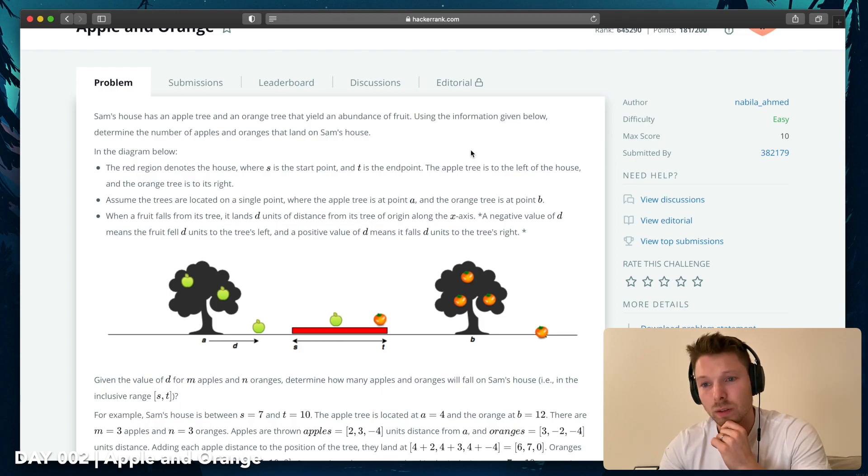Assume the trees are located on a single point, where the apple tree is at point A and the orange tree is at point B. When a fruit falls from its tree, it lands D units of distance from its tree of origin along the X axis. A negative value of D means that the fruit fell D units to the tree's left and a positive value means it fell to the right.